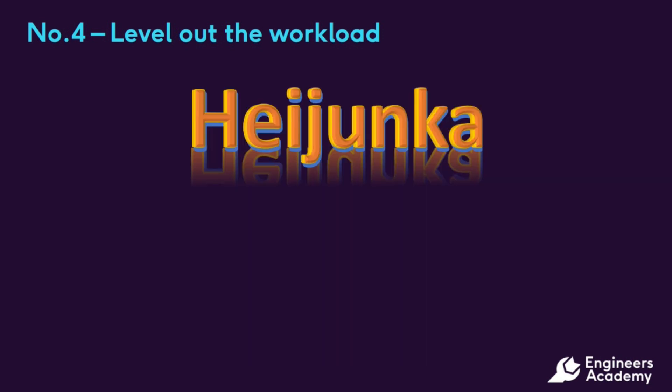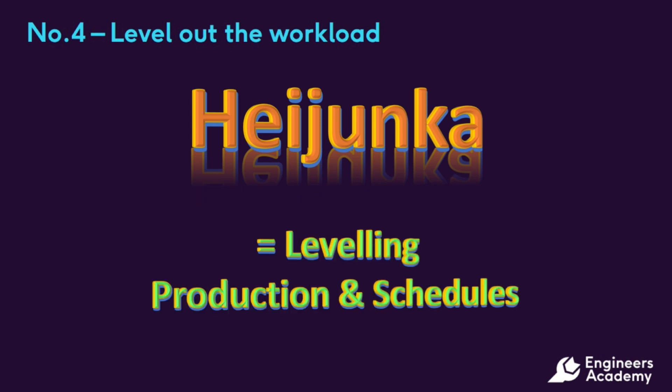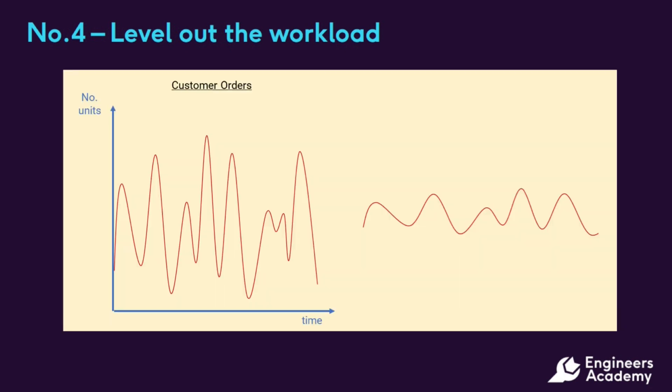Stabilizing the system and creating an evenness, or leveling out of the work schedule, is termed heijunka by Toyota. It is a fundamental concept for eliminating mura, and hence the other two M's — muri and muda. Our second graph here shows that we have leveled out the workload somewhat.